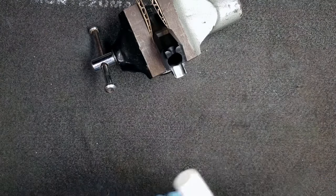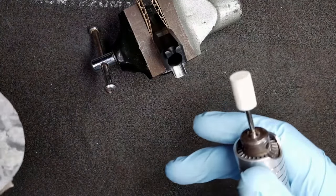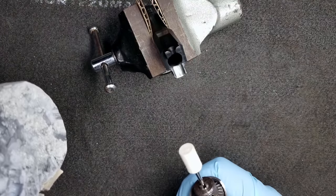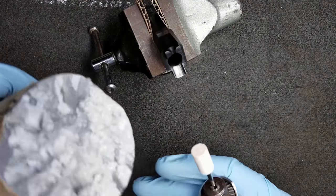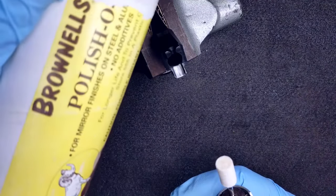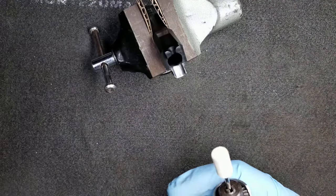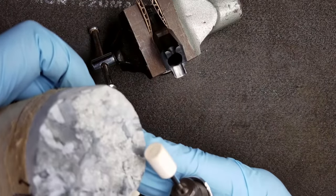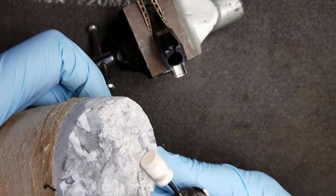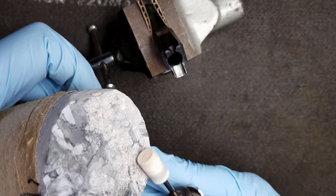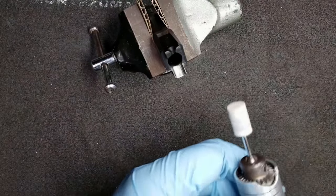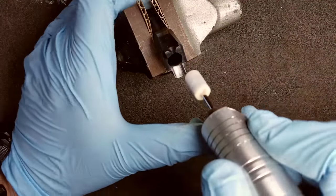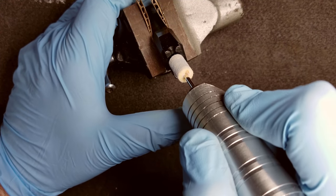To get started, we're going to get our felt bob that snugly fits inside of our chamber mouth and we're going to use some of our polishing compound, which in this case is our Brownells Polishing Array 555. We're just going to coat it, get some on our felt bob, and then we are going to insert it into our chamber and start polishing.